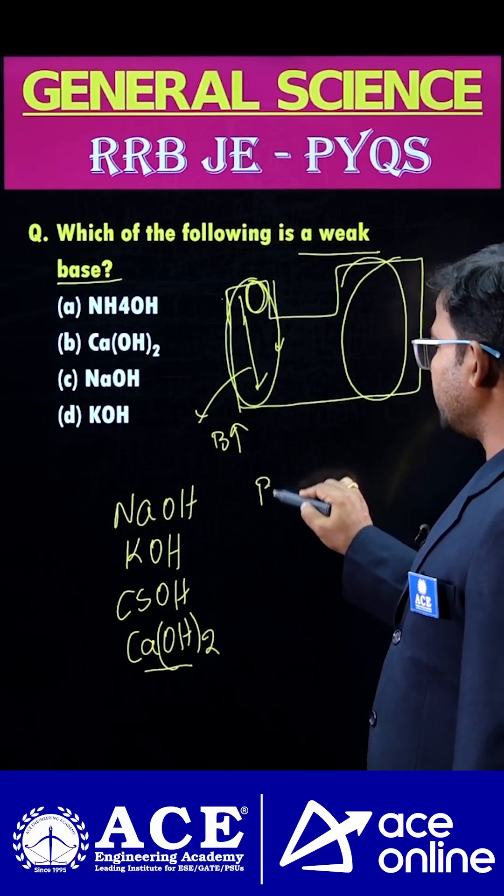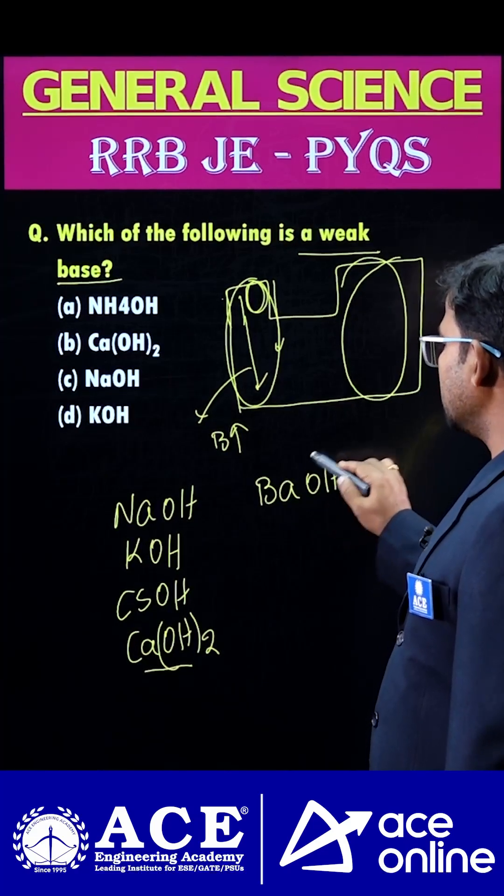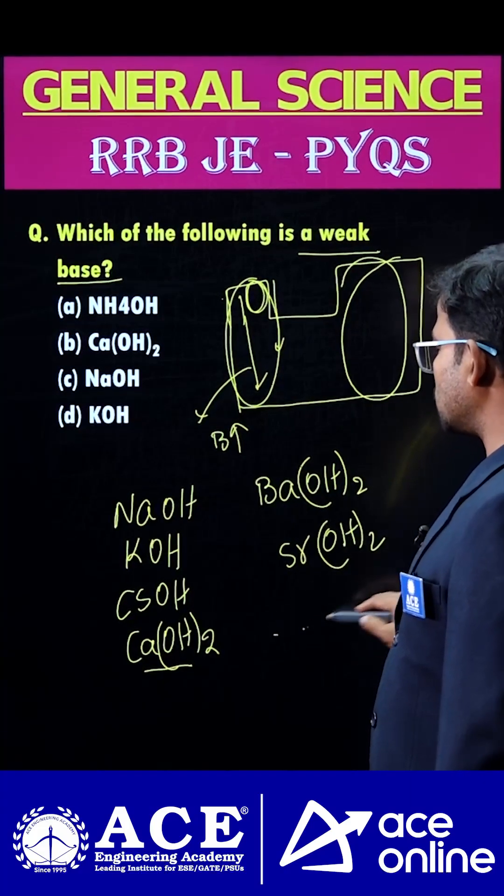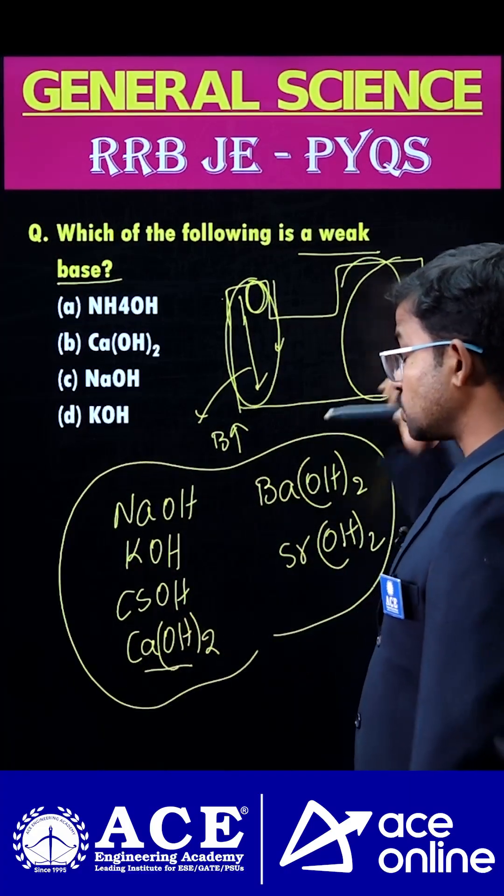Next one, barium hydroxide. Next, strontium hydroxide also. So these are the strong, strongest bases.